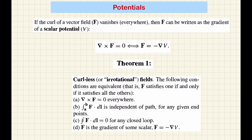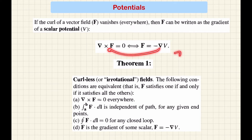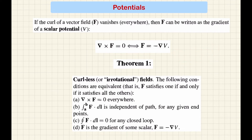If the curl of a vector field vanishes, then F is the gradient of a scalar potential V: F = -∇V, where V is the scalar potential and the minus sign is by convention. Substituting into del×F gives del×(-∇V), and since the curl of the gradient of any scalar function is zero, this is naturally satisfied.